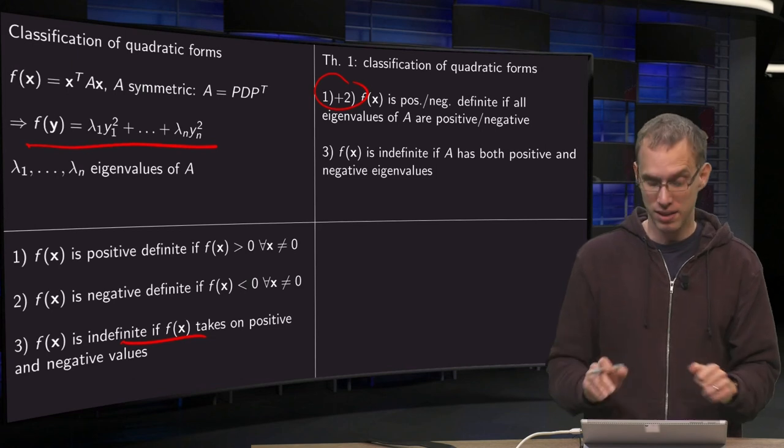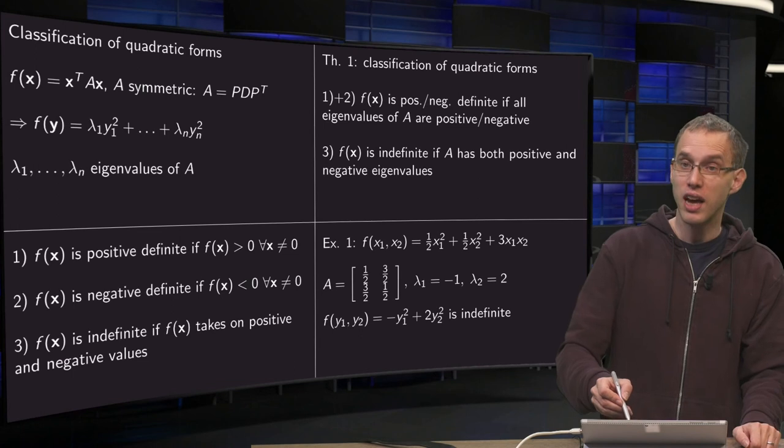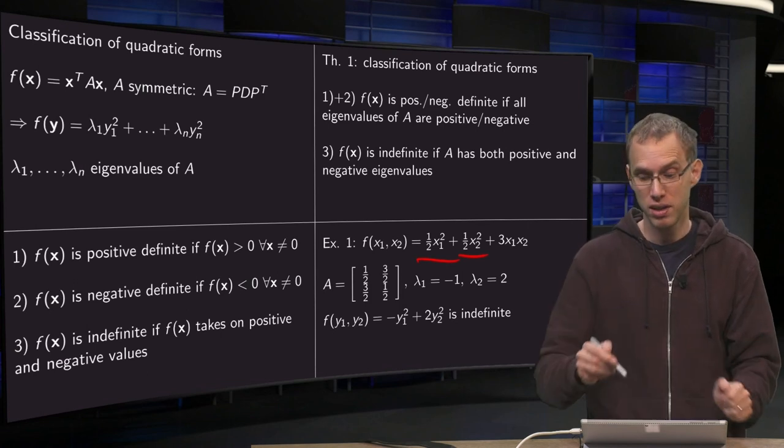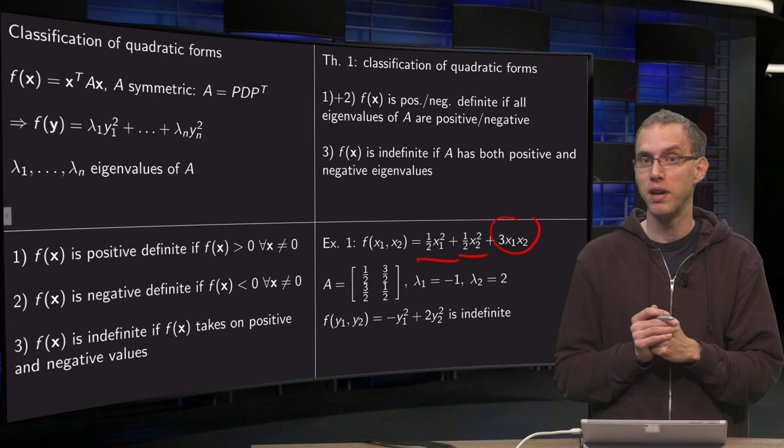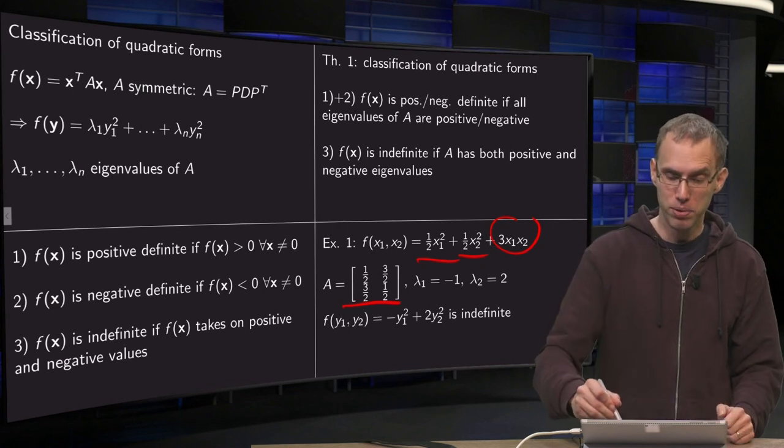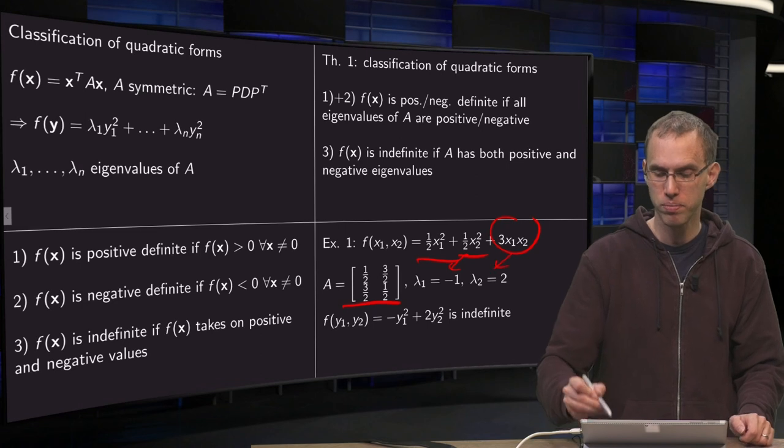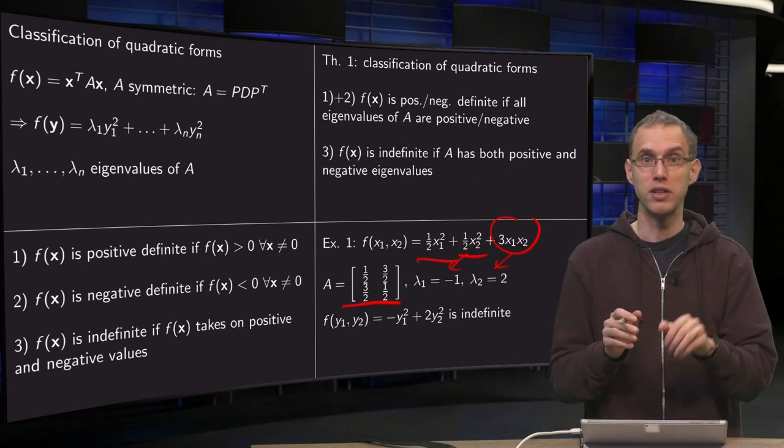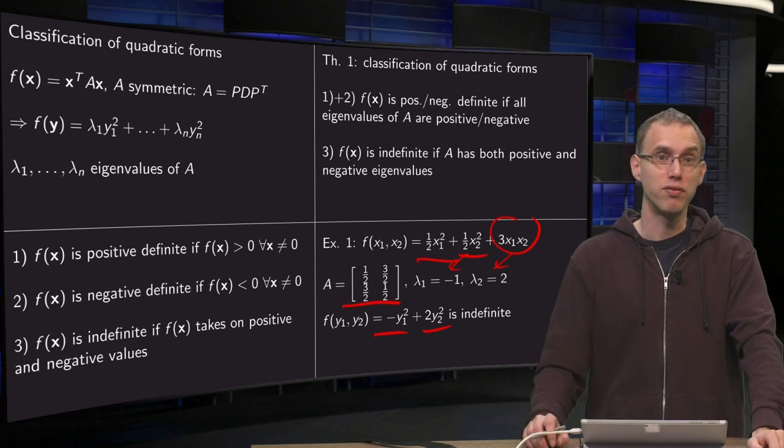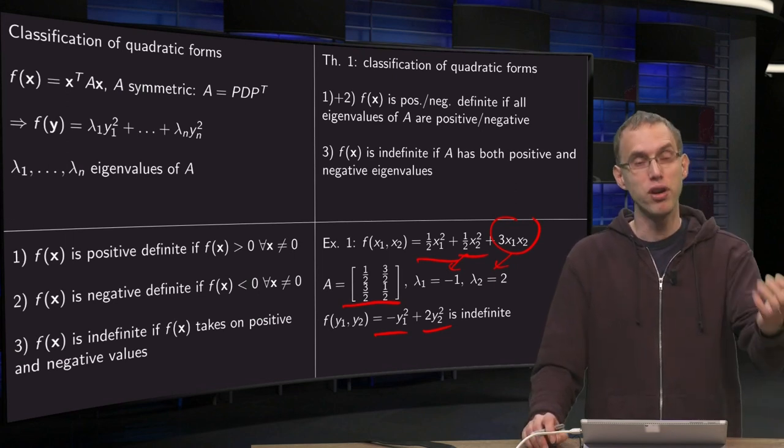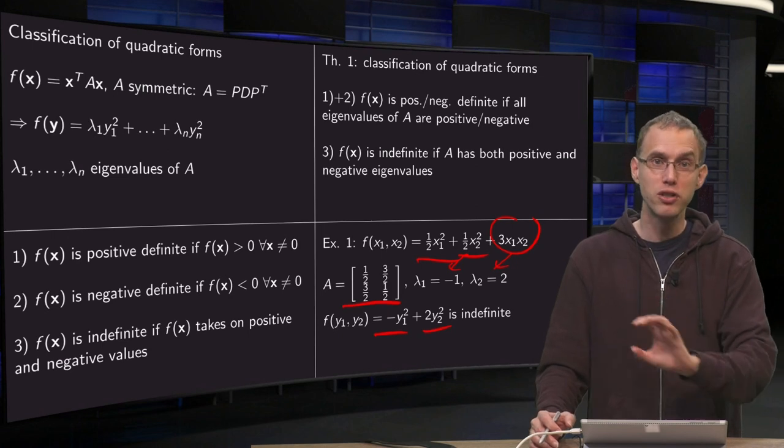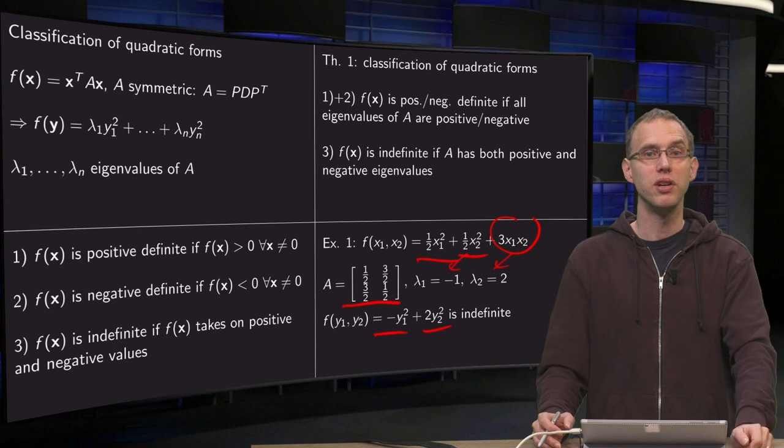Now how can you see that in an explicit example if you look at the matrix A? Well this f of x looks positive definite. You have one half x1 squared plus one half x2 squared. Looks quite positive, right? I have this mixed term but what does it matter? Well actually quite a lot. If you form your matrix A then you can compute your eigenvalues, which turn out to be minus one and two. Then in the y language you can get rid of your mixed term and the quadratic form becomes minus y1 squared plus two times y2 squared. Then you see that in fact this quadratic form is indefinite. So if you want to determine whether your quadratic form is positive definite, negative definite, or indefinite, you always have to get rid of the mixed terms. You have to look at eigenvalues and they will tell you the answer.